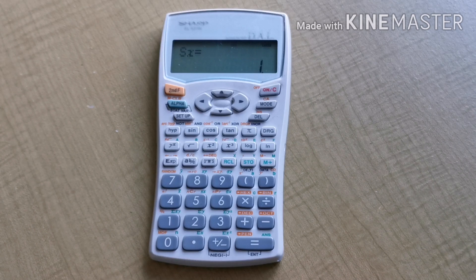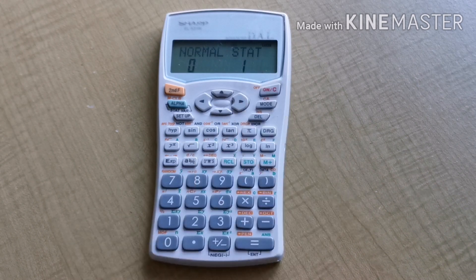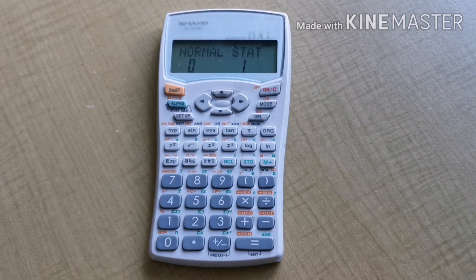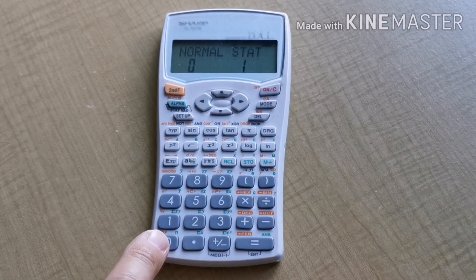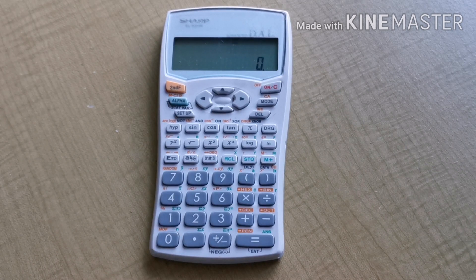Now if I want to do a new statistical calculation, I can simply choose stat mode all over again by pressing mode and 1 and that will clear out the old data. Or if I want to go back to using my calculator in computation mode, I can choose mode and press 0 for normal so my calculator is now restored to its normal mode.